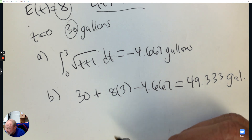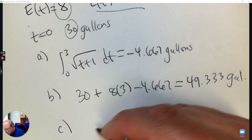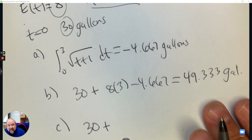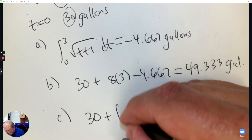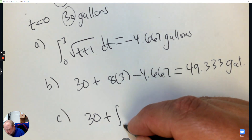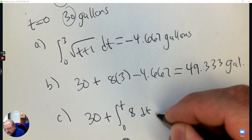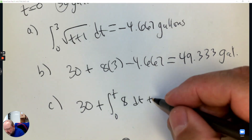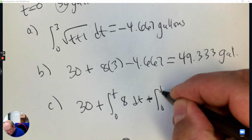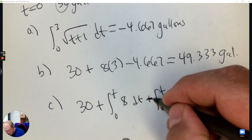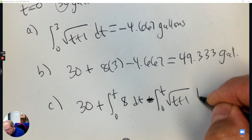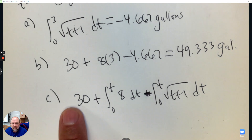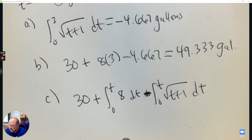Part C: find the expression for the total number of gallons of water at any time. So we start with 30, and then we have two equations — one we're adding, which is eight, and then one that we're subtracting, the one that's leaking. So we start with 30, this is what we're adding every minute, and this is the rate in terms of it leaking — what's adding and what's subtracting.